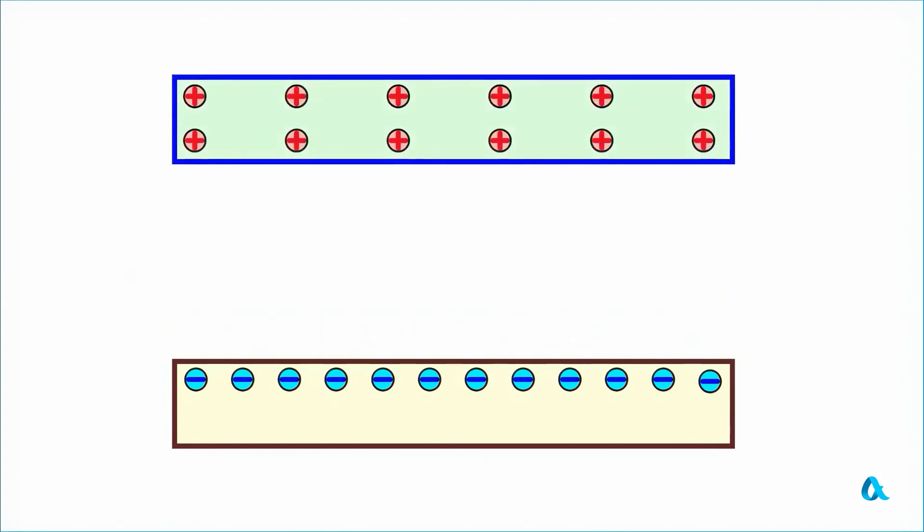The lower side of the plate remains positively charged. We remove the grounding and take the plate away. Now the positive charge redistributes across both sides of it. We ground the plate again. Electrons come to it from the ground. The plate is neutralized. And everything returns to the original state. So the experiment can be repeated again.